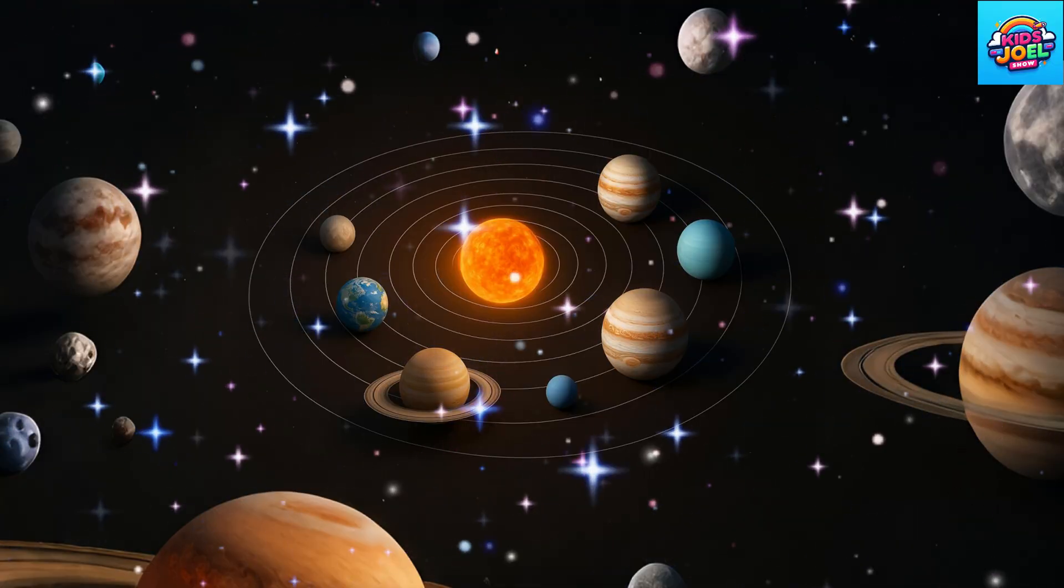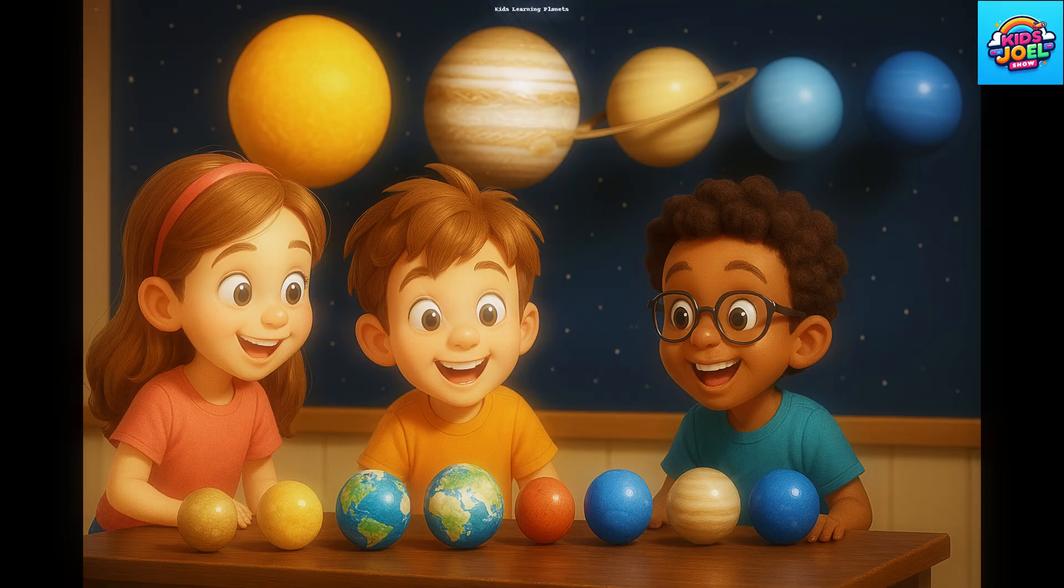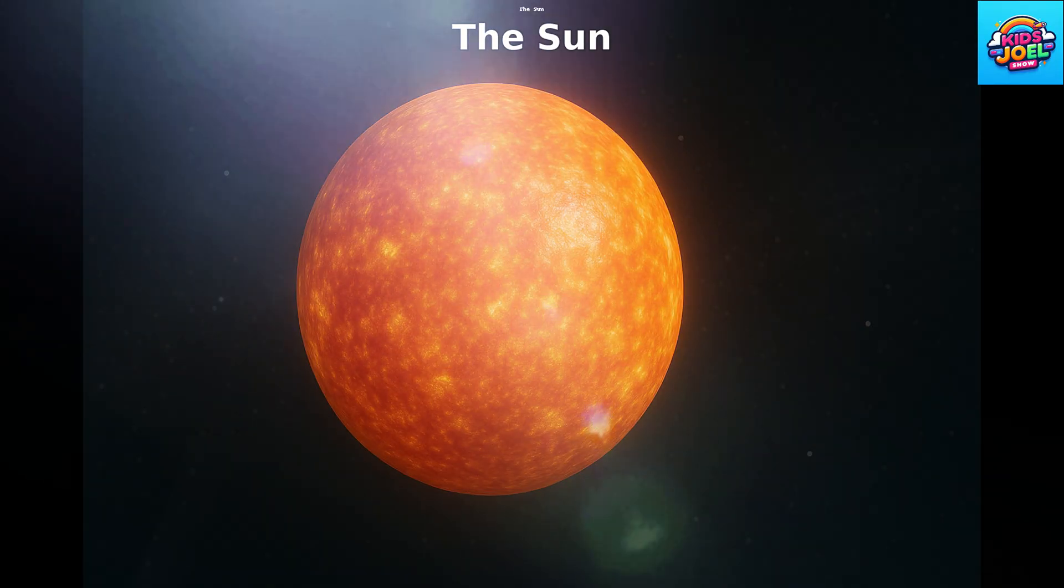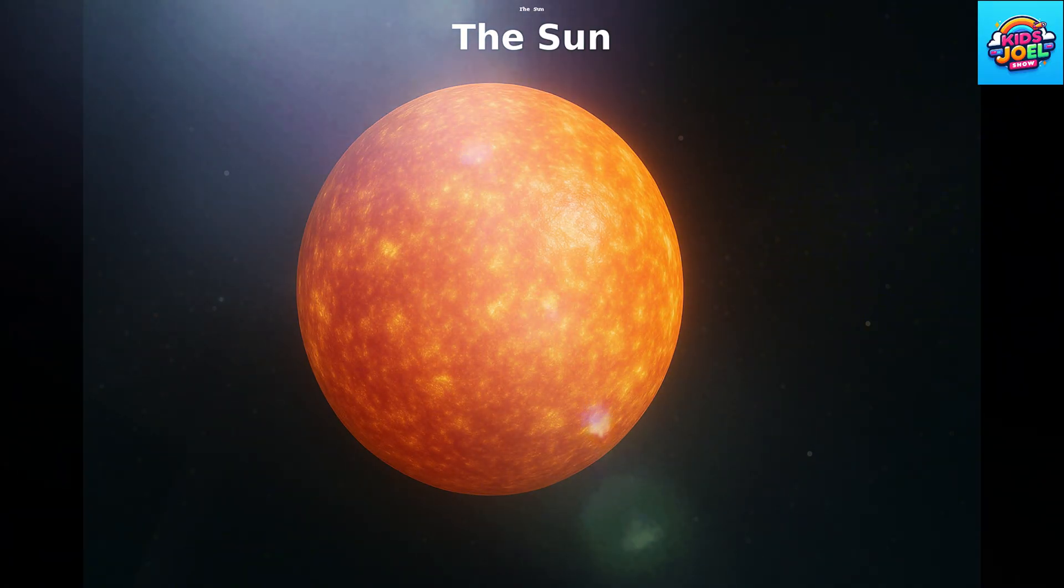When we spin around the sun, in space so wide, eight planets going on a solar ride. From Mercury out to Neptune's shore, let's learn the planets and so much more.